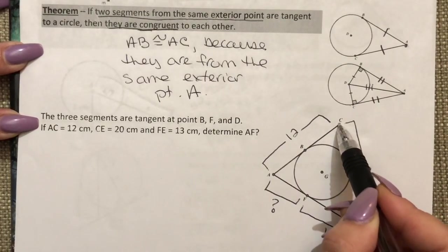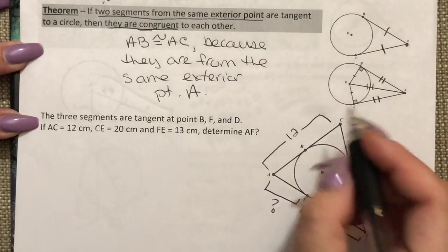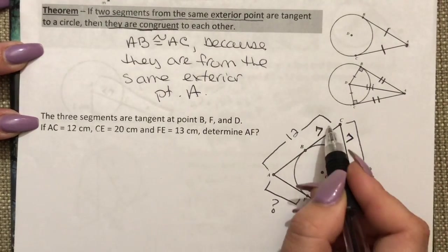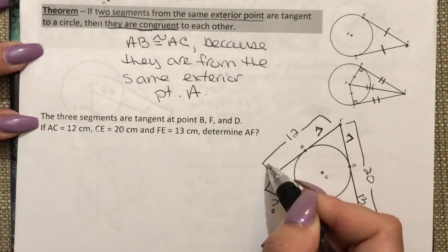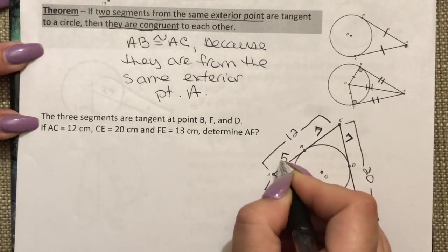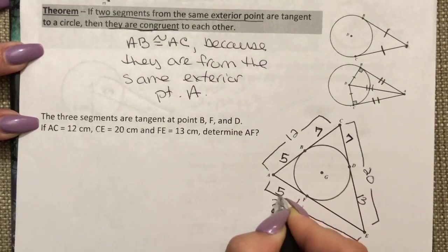And again I can see this is an exterior point, so if this is 7 from here to here must also be 7. But again if the whole thing is 12, 12 take away the 7 gives me 5 which means this piece must also be 5.